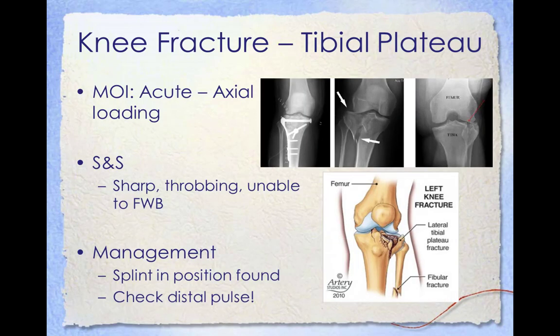A tibial plateau fracture is a bone fracture or break in the continuity of the bone occurring in the proximal part of the tibia. The tibial plateau is a crucial weight-bearing area located in the upper extremity of the tibia, composed of two slightly concave condyles — a medial condyle and a lateral condyle — separated by an intercondylar eminence and sloping areas in front and behind. These fractures may be divided into low-energy and high-energy types. Low-energy fractures are commonly seen in older females due to osteoporotic bone changes and are typically depressed fractures. High-energy fractures commonly result from motor vehicle accidents, falls, or sports-related injuries, which constitute the majority of tibial plateau fractures in young individuals.